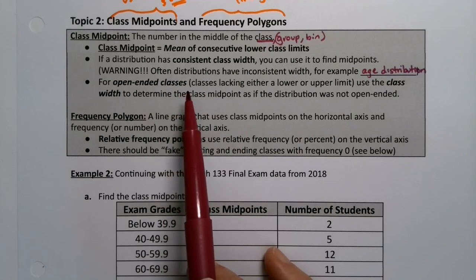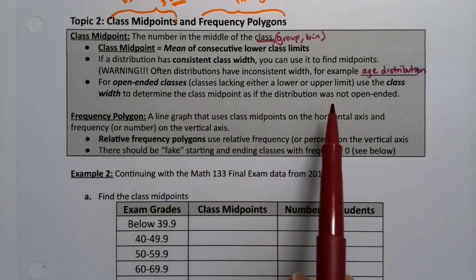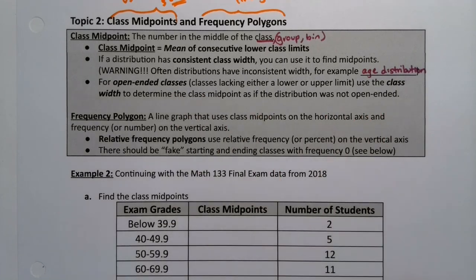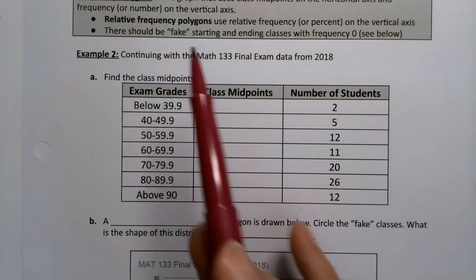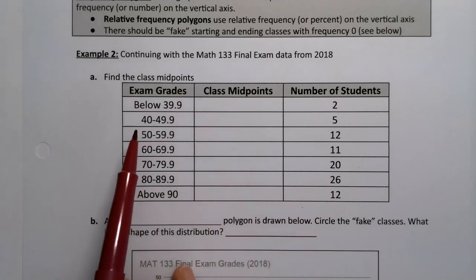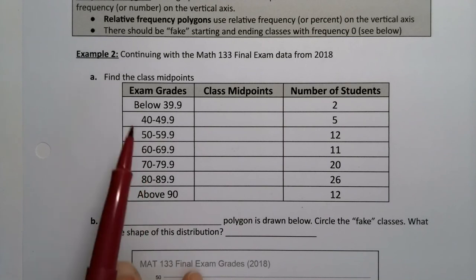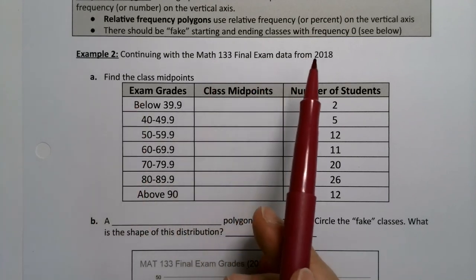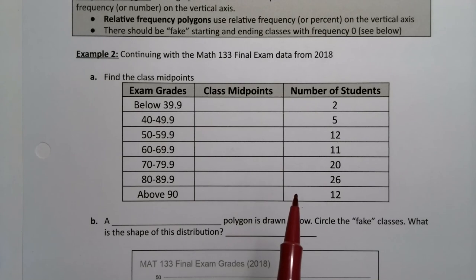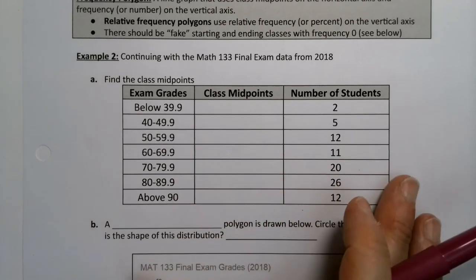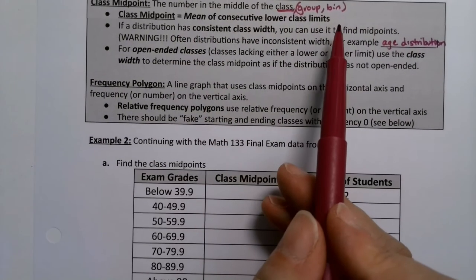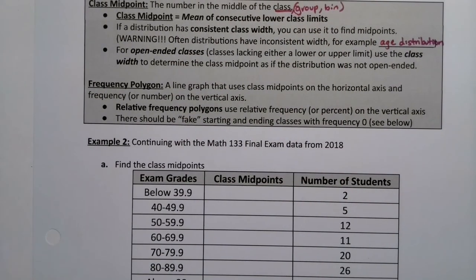Usually when we have those, they'll be inconsistent for a while and then they'll gain consistent width later on. And you can use that consistent width later on in order to find open-ended class limits. So, for example, if the class width towards the end of the table is 10, then you'll use that to find the class midpoint for an open-ended class. Now, let's look and see what I mean right down here. So before I even talk about frequency polygons, let's look at this. So this is the same class that we've looked at before, same classes we've looked at before for exam grades. Remember, these were the final exam data from a whole bunch of classes.